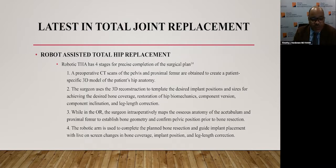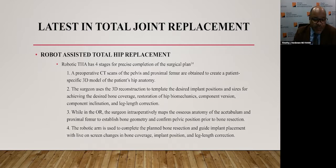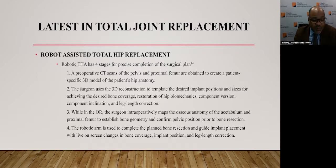There are four stages to complete robotic-assisted total hip arthroplasty. First, a preoperative CT scan of the pelvis and proximal femur is obtained to create a patient-specific 3D model of the hip anatomy. The surgeon then uses the 3D reconstruction to template the desired implant positions and sizes for achieving the desired bone coverage, restoration of hip biomechanics, component version, component inclination, and limb length correction. Next, while in the operating room, the surgeon intraoperatively maps the osseous anatomy of the acetabulum and proximal femur to establish bone geometry and confirm pelvic position prior to bone resection.